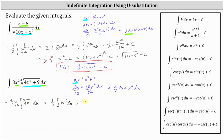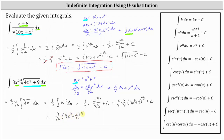We now integrate with respect to u, which gives us one fourth times u to the power of one third plus one, which is four thirds, divided by four thirds, plus C. Dividing by four thirds is equivalent to multiplying by the reciprocal three fourths, giving us one fourth times three fourths times u to the power of four thirds, which in terms of x is the quantity 4x cubed plus 9 raised to the power of four thirds plus C. Simplifying one more time, we have three sixteenths times the quantity 4x cubed plus 9 raised to the power of four thirds plus C, which is our F(x).